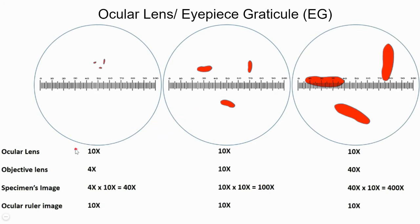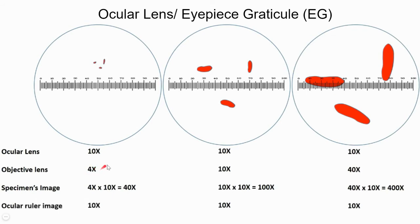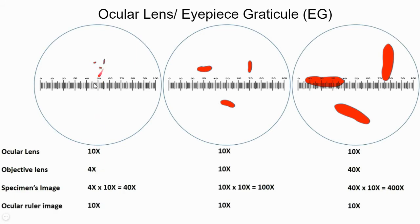Let's look at three cases. In the first case, you are observing your specimen at a 4x magnifying objective lens — the lens near the stage — and your ocular lens, meaning your eyepiece lens, has 10x magnification. When you view your specimen at 40x total magnification (10 × 4), your specimen looks a certain size and your eyepiece graticule appears like this.